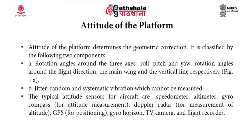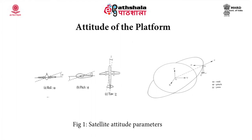The typical attitude sensors for aircrafts are speedometer, altimeter, gyro compass for altitude and attitude measurement, Doppler radar for measurement of altitude, GPS for positioning, gyro horizon, TV camera, and flight recorder. In this figure you can see the three parameters which we discussed earlier: roll, pitch, and yaw.